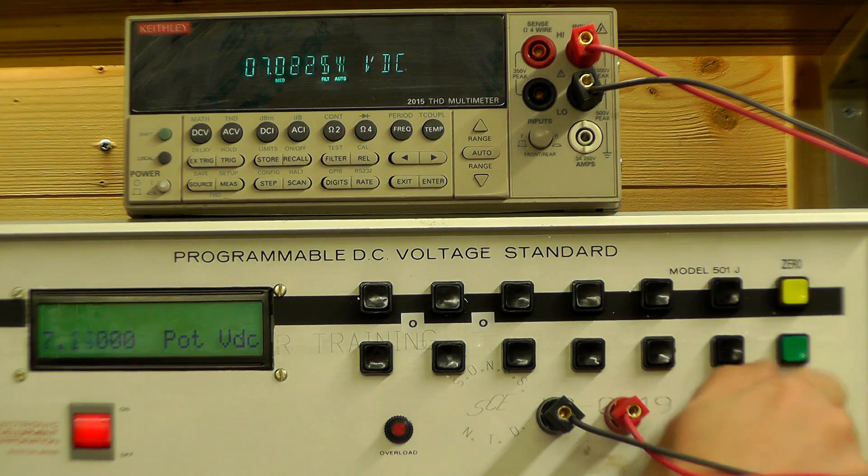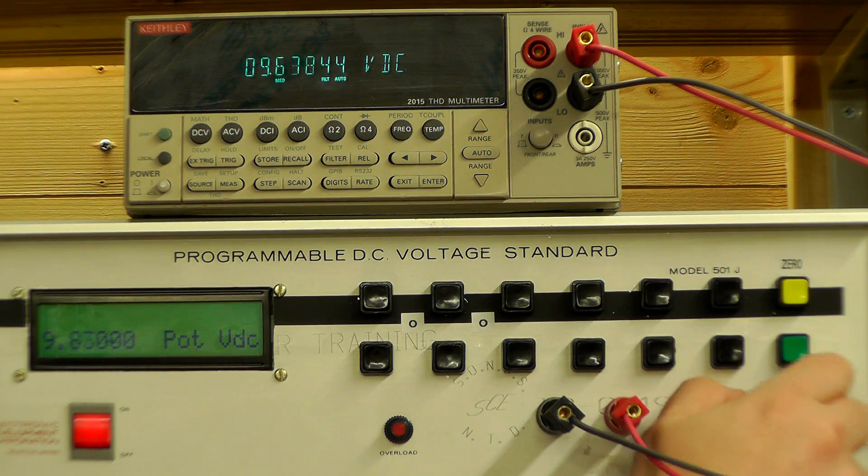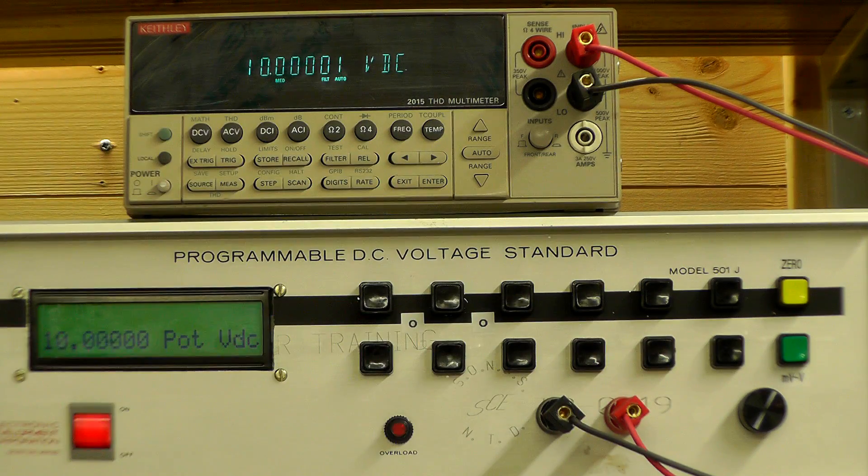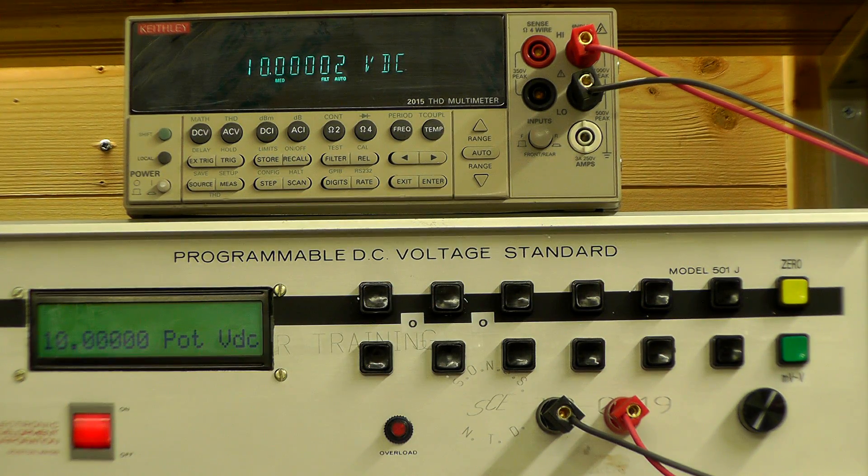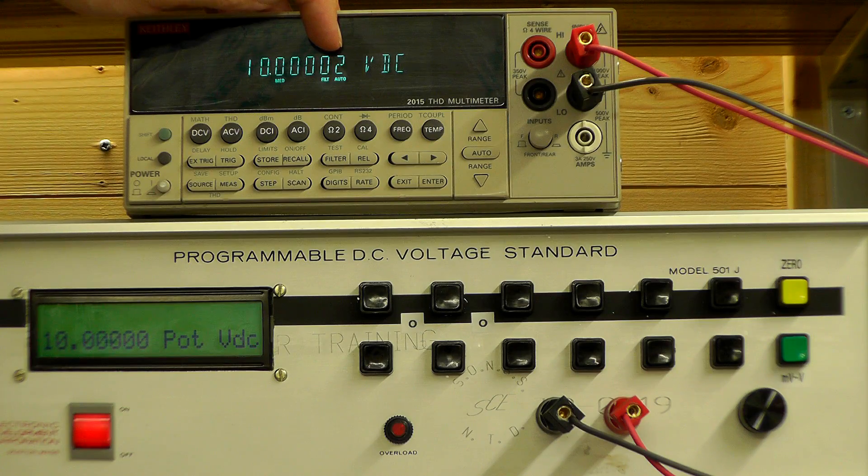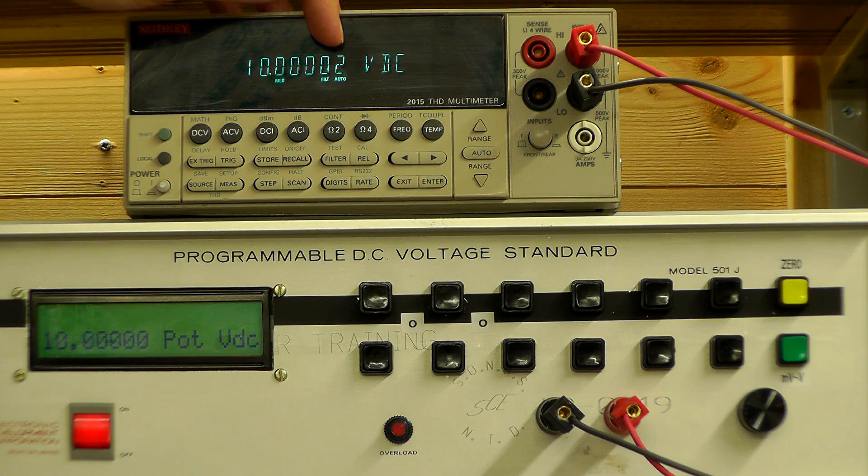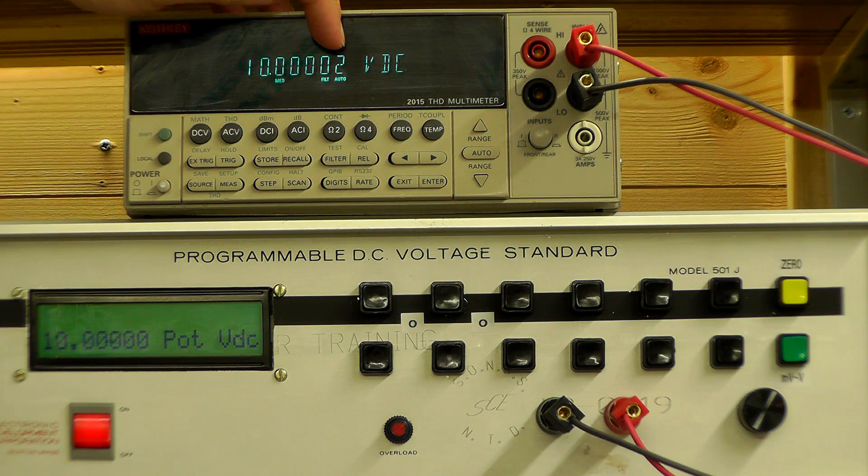So I can wind it all the way up to 10 volts. There we go. So I've got the pot configured to give it a 0 to 10 volts. 10.00002 which is about 20 microvolts there.